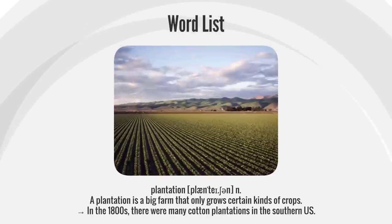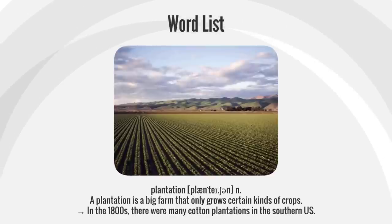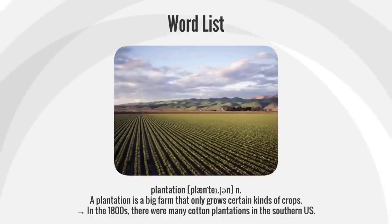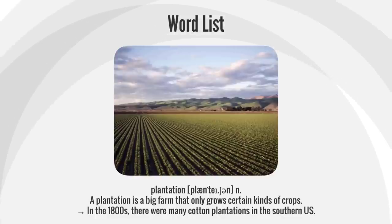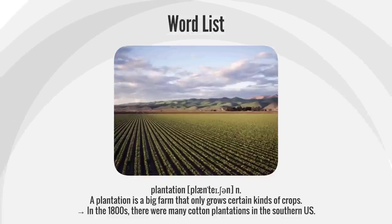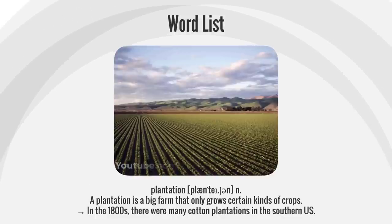Plantation. A plantation is a big farm that only grows certain kinds of crops. In the 1800s, there were many cotton plantations in the southern U.S.